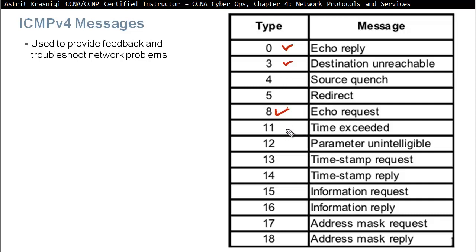Another type of ICMP message is Time Exceeded, which relates to the TTL. We set the TTL — for example to 64 — and every hop, when the packet goes from one router to another, the router reduces the TTL by one. If the TTL reaches zero, the router replies to the source with a Time Exceeded message. Other messages include Source Quench — to reduce traffic when a router is too busy — and Redirect, indicating a better path to the destination.